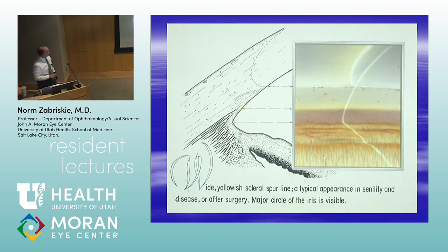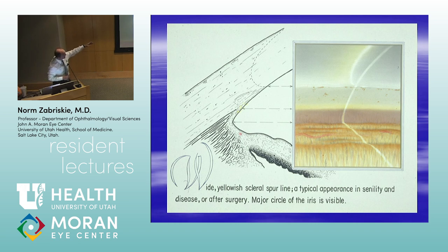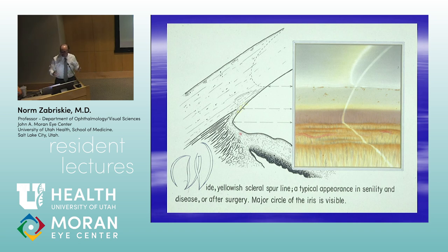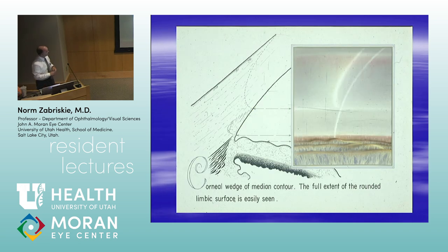Here's the angle anatomy: the corneal wedge tells you where Schwalbe's line is — the external and internal corneal reflections coming together at Schwalbe's line where endothelium starts. Then you have open angle structures. This shows a wide open angle with all structures: Schwalbe's line from the corneal wedge, the trabecular meshwork, the yellowish scleral spur, ciliary body face, and the iris. If you can see the scleral spur, you have an open angle by definition — recognizing that is really important.